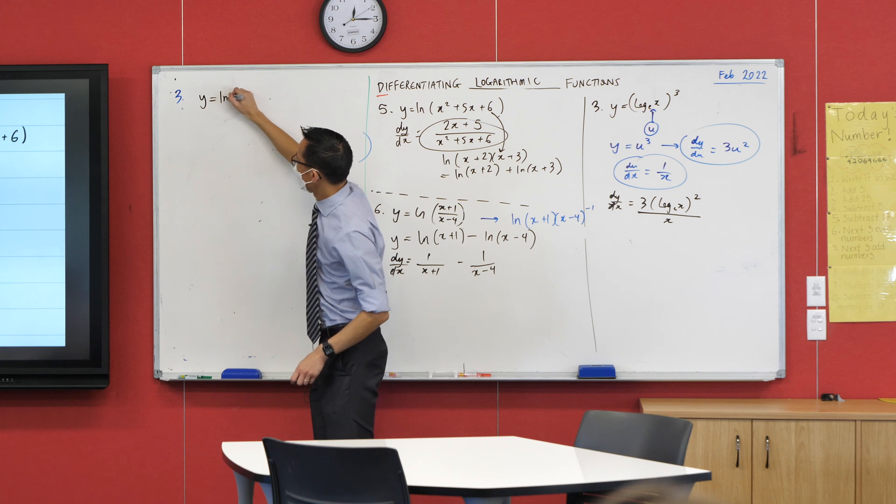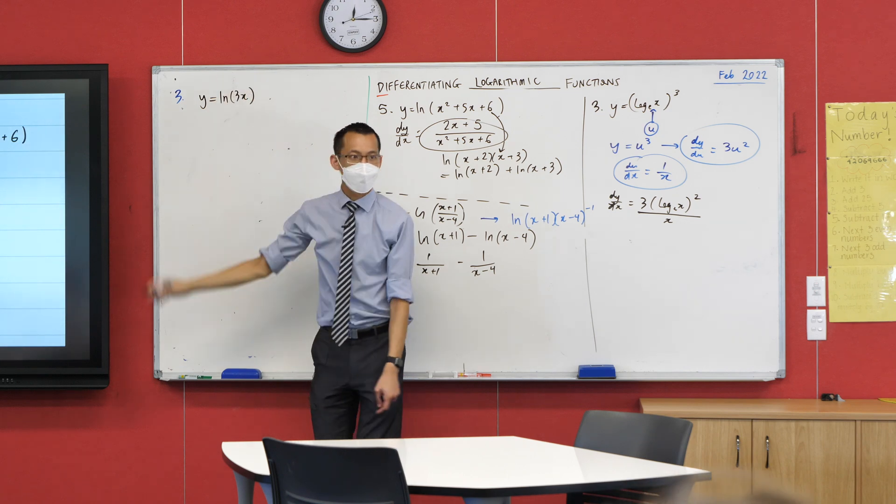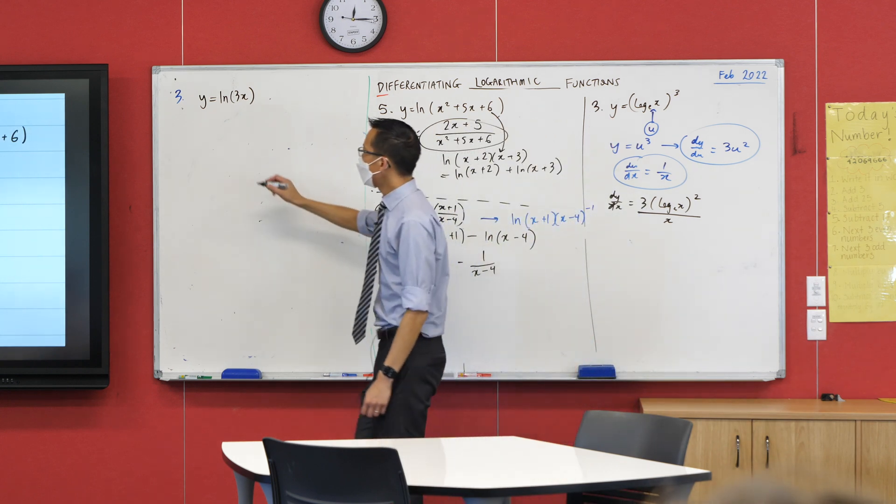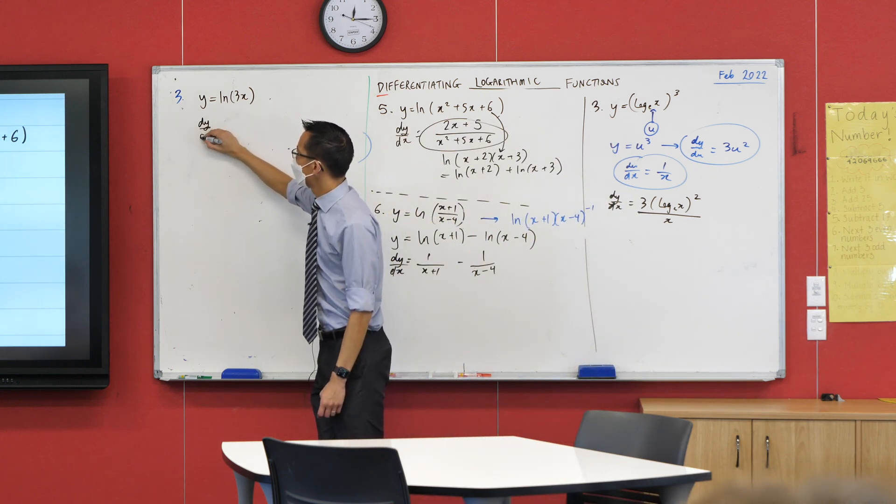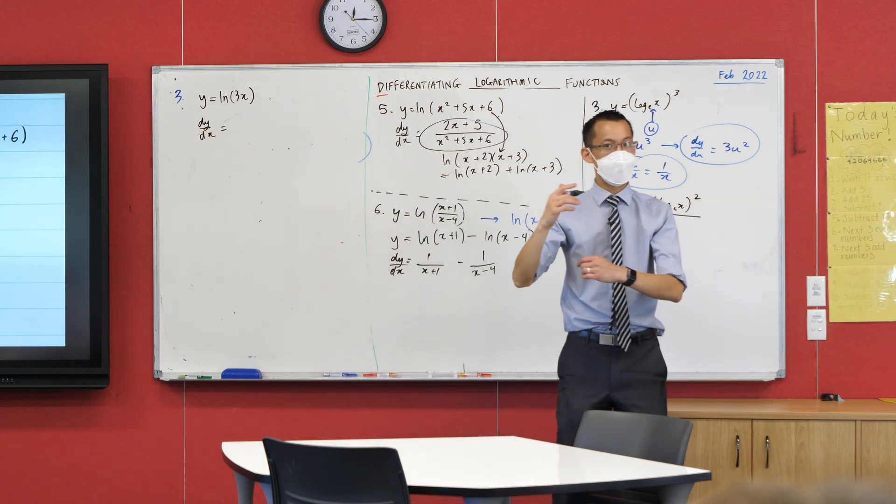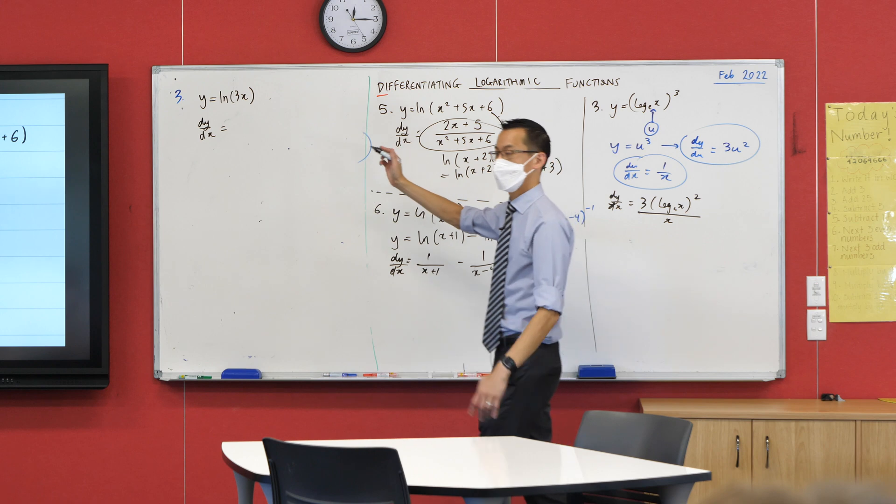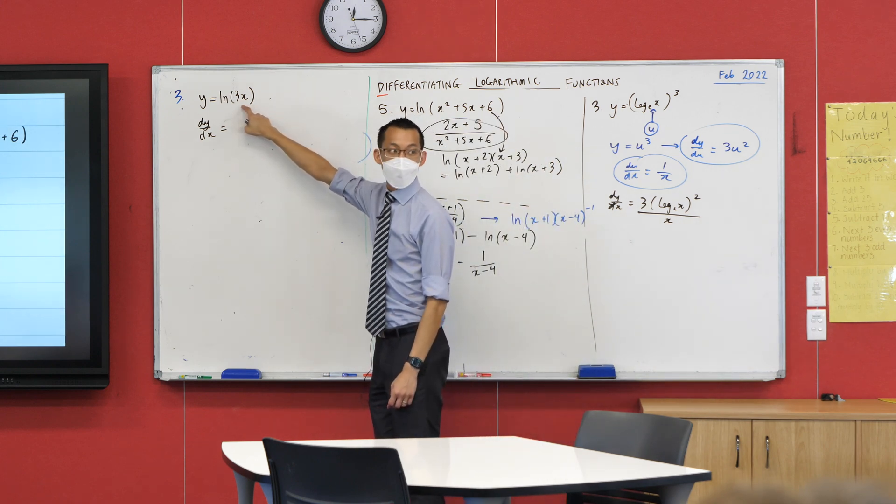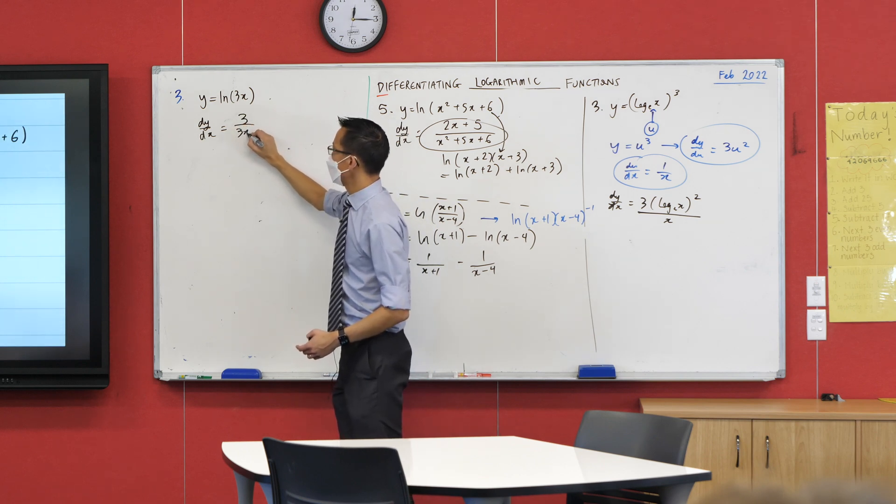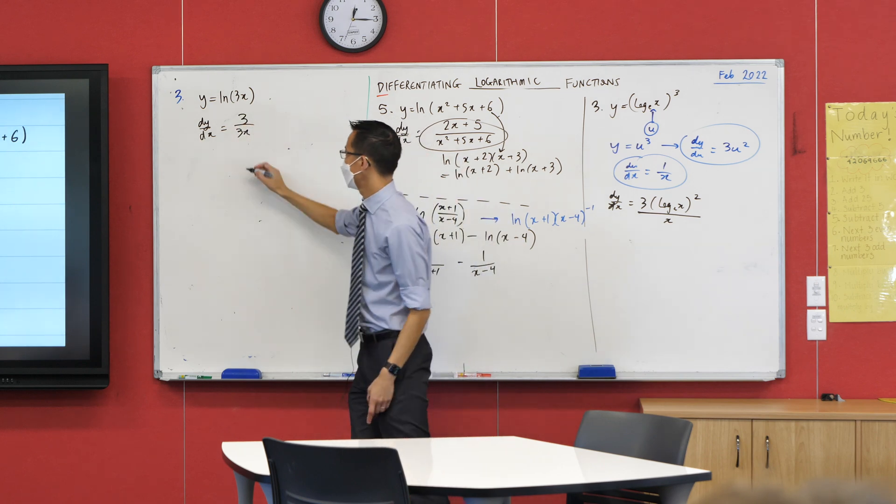So question seven: y equals log of 3x. Now if we just use the rule we've been using, something weird comes out. What will f dash on f—don't simplify it—what will f dash on f be equal to in this case?